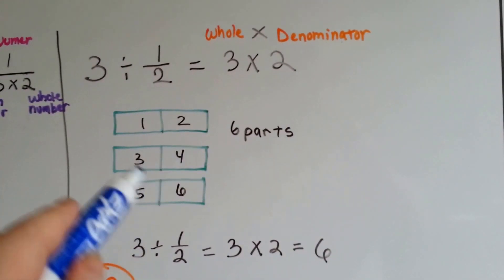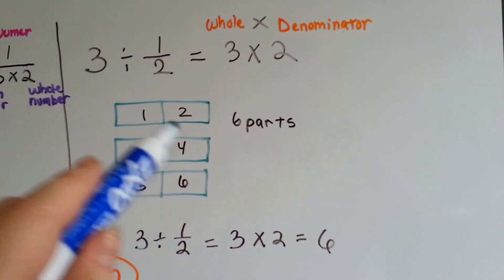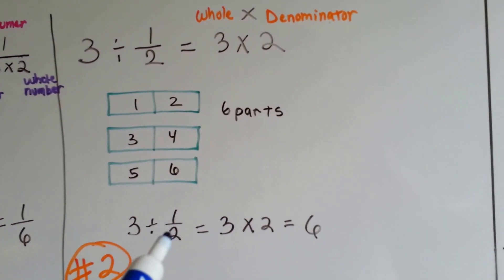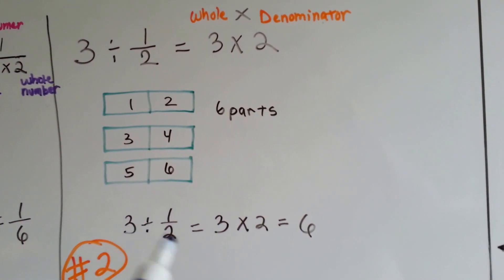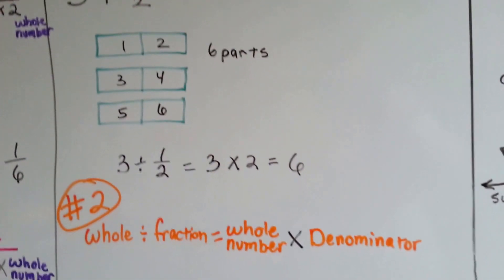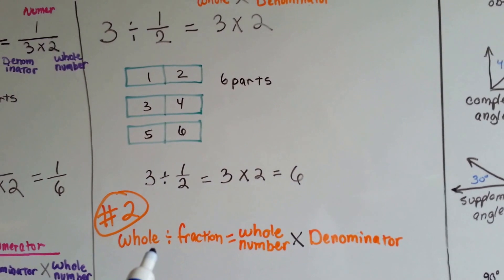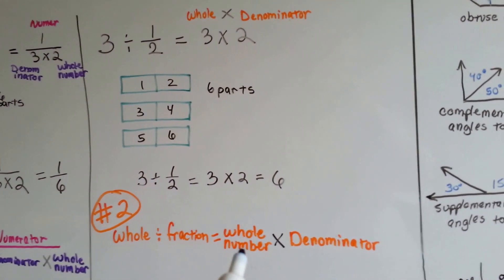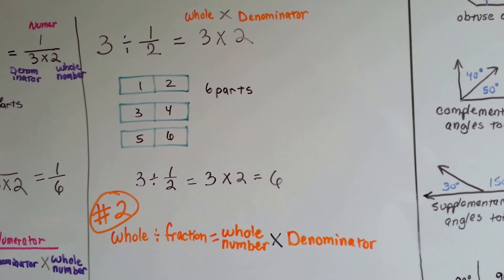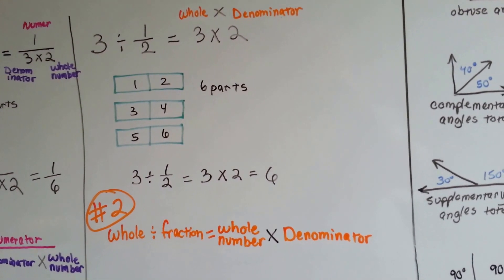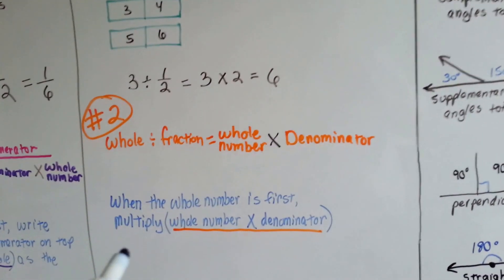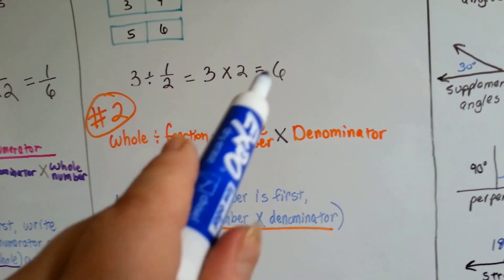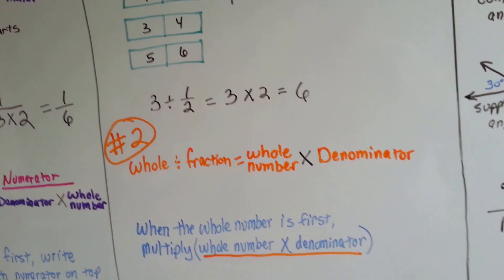Rule number 2 again: 3 divided by a half. All it means is the whole number times the denominator. If you've got 3 bars and you cut them in half, you're going to have 6 parts. 3 divided by a half is really just 3 times 2. When the whole number is first divided by a fraction, just multiply the whole number times the denominator.